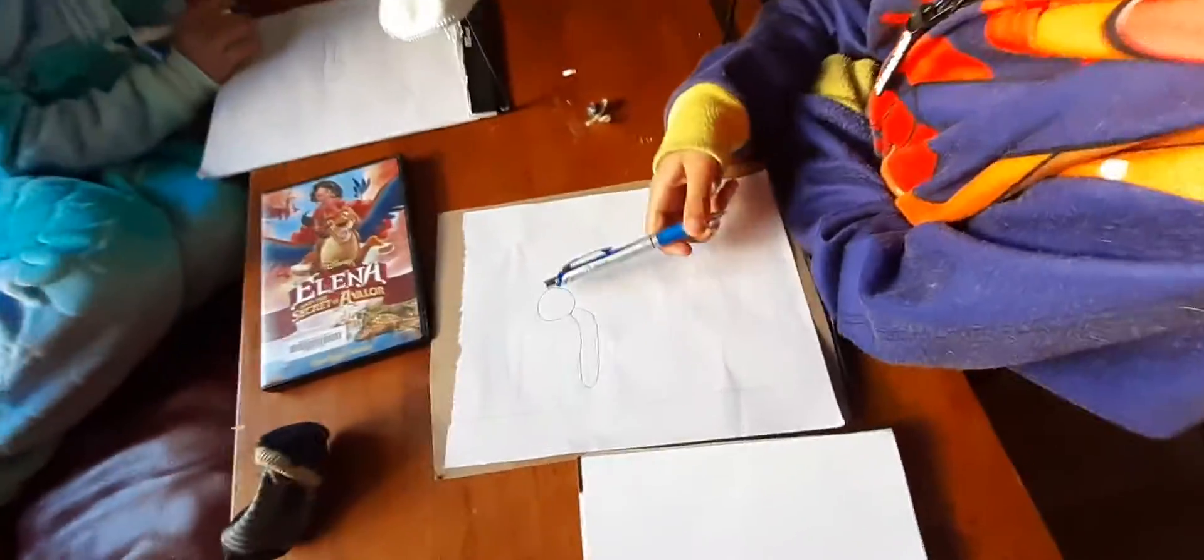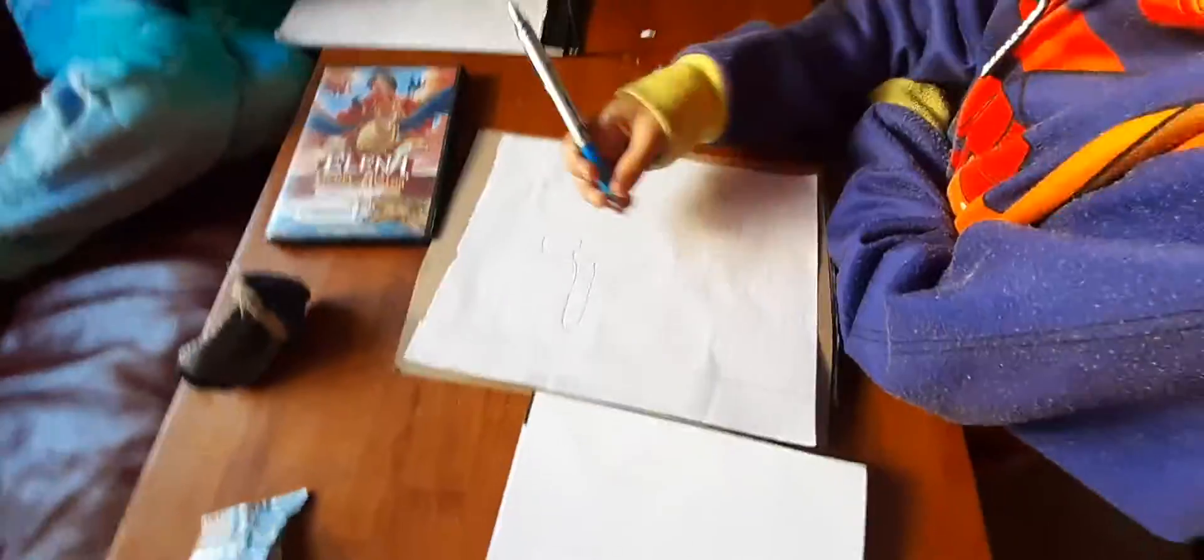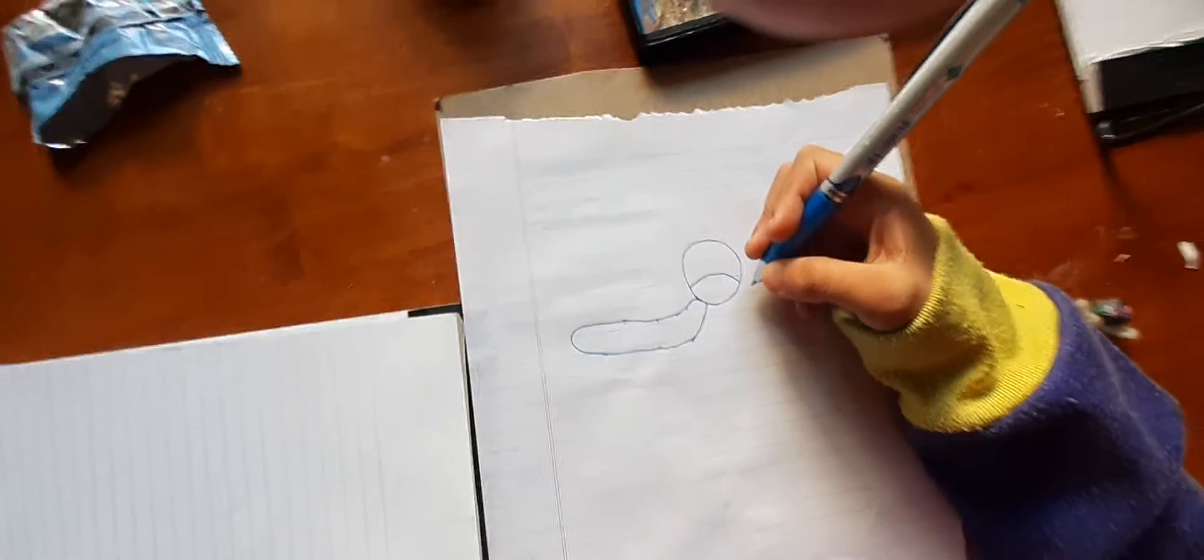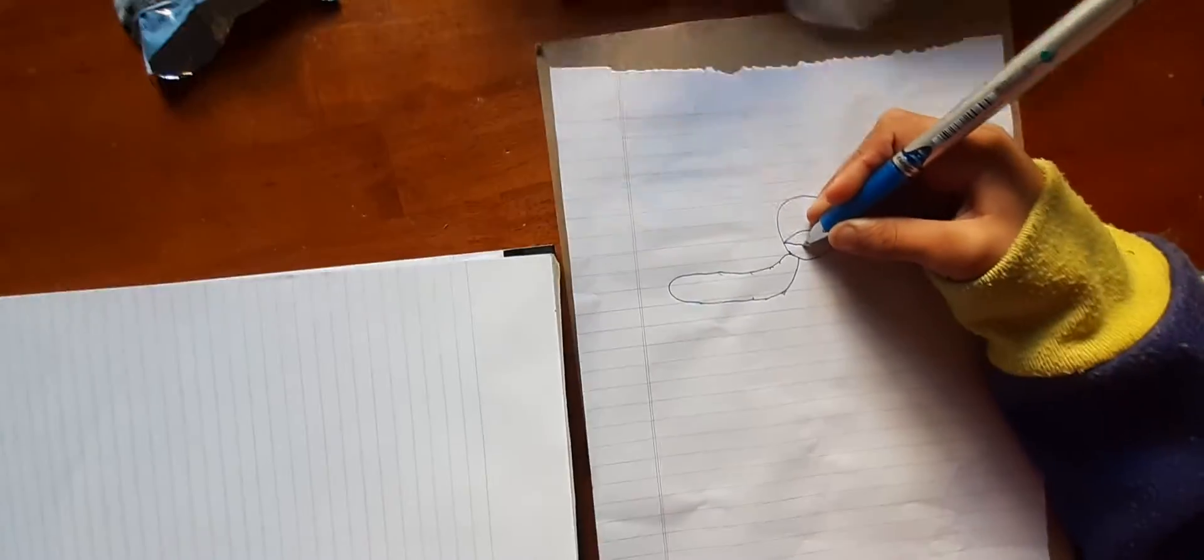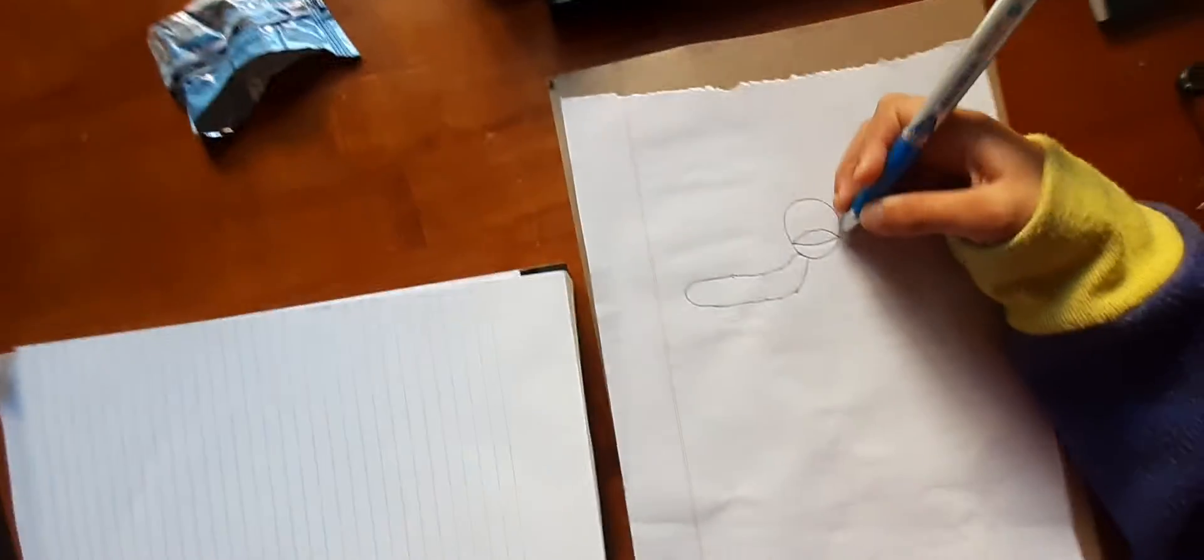So the first thing you're going to want to do is this. Next, draw a line like that, well, a sort of curved rainbow, and sort of something like this.